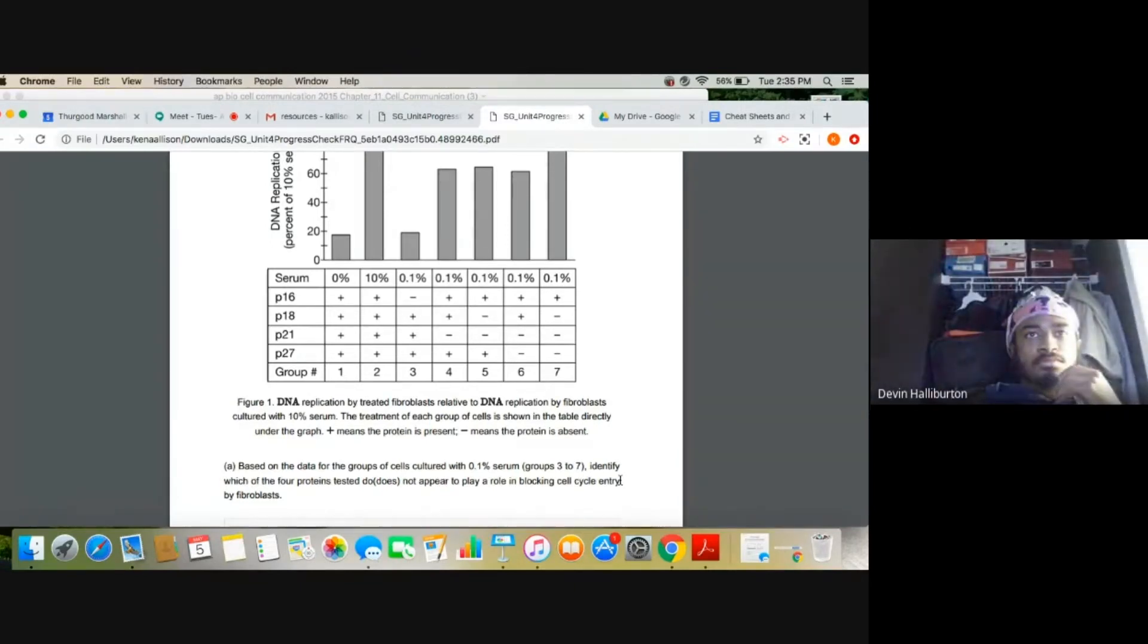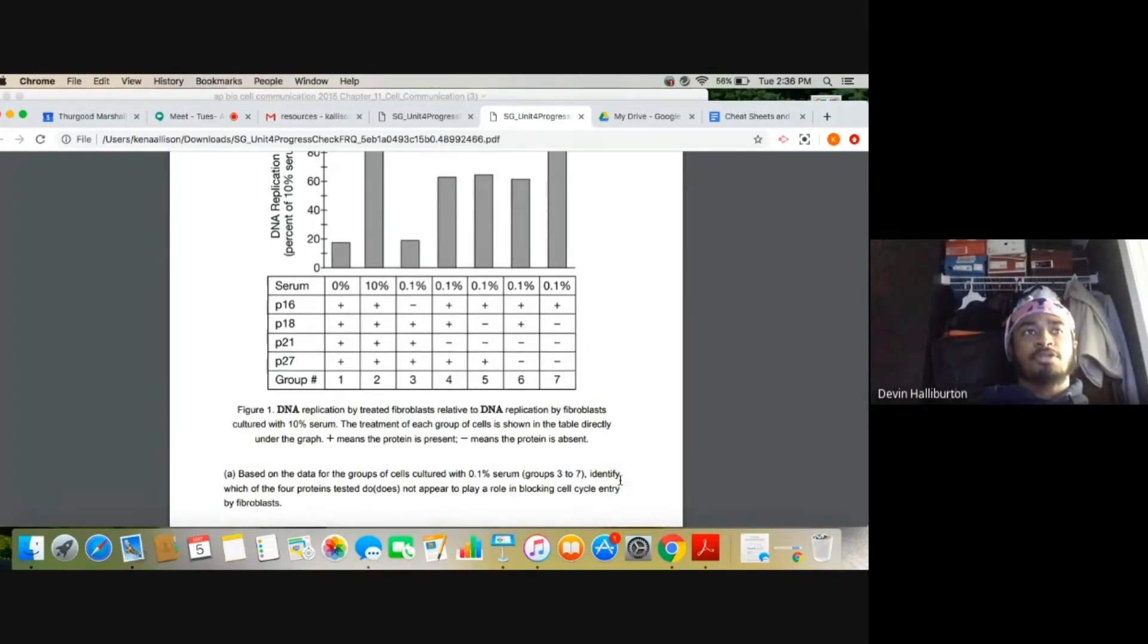So I said, does not play a role in blocking... I said group seven because it has the most DNA replication between groups three to seven.